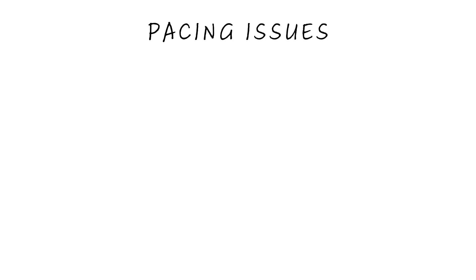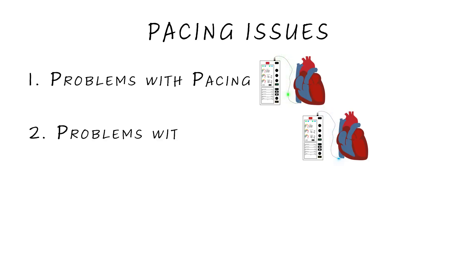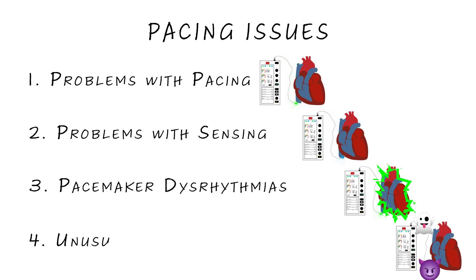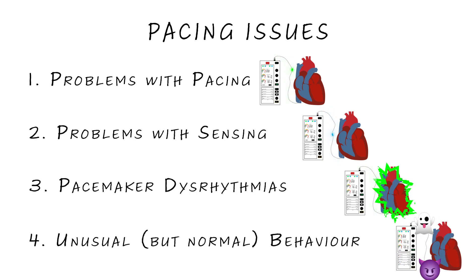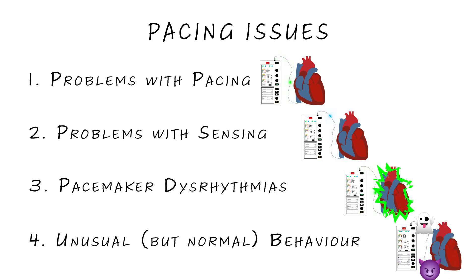We can break pacemaker issues down into: number one, problems with pacing and capture; number two, problems with sensing; number three, pacemaker dysrhythmias; and number four, unusual but normal pacemaker behaviours. The first two are relatively straightforward once you have a handle on the basics of pacing, and we'll cover both of these in this video. The second two are a bit more complicated — they only happen in dual chamber pacing and need a bit more explanation, so we'll cover those in the next video in the series.